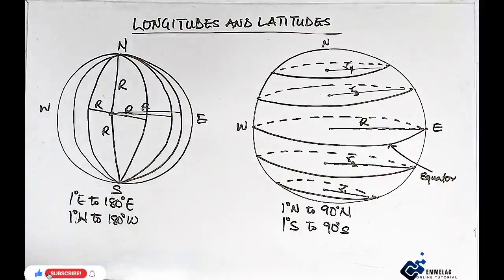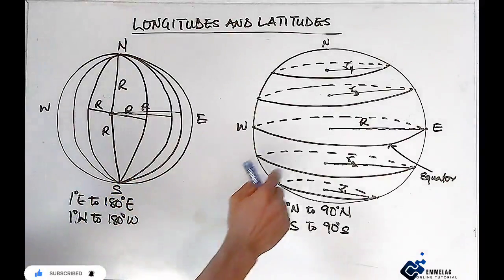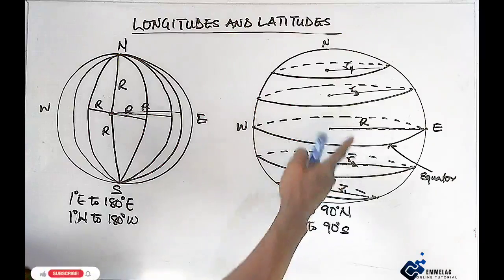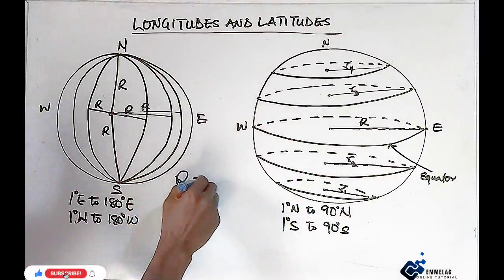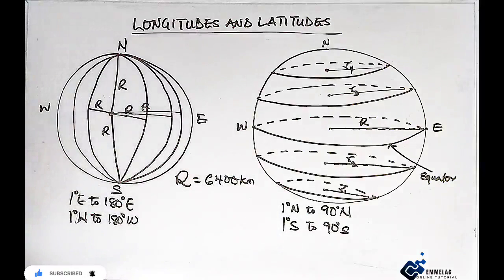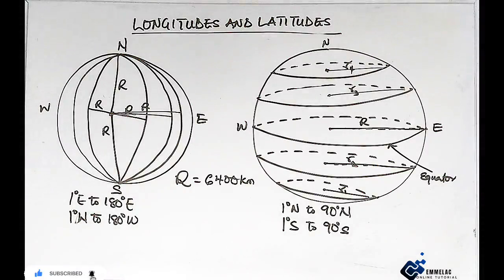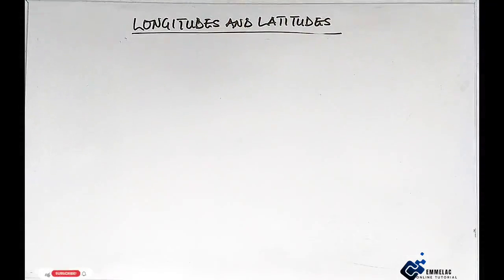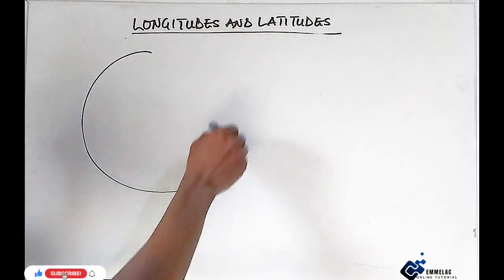Now we'll be looking at the relationship between the great radius R and the small radius. Take note that the great radius R is approximately equal to 6400 kilometers. These are the features of longitude and latitude. Now let us look at the relationship between the big R and the small r, having this circle again that represents the Earth.